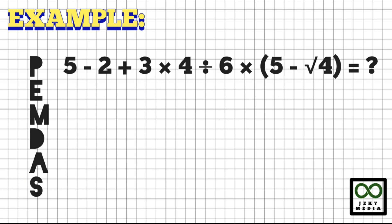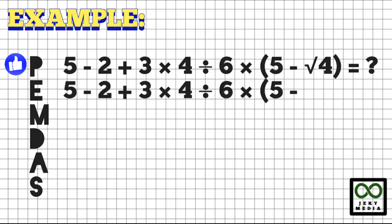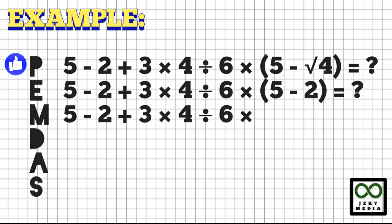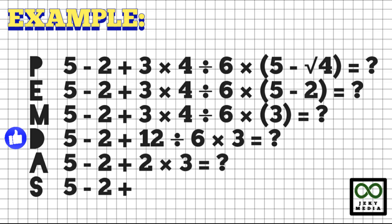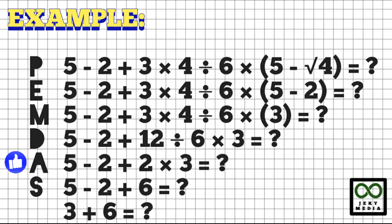Last example: 5 minus 2 plus 3 times 4 divided by 6 times the quantity inside a parenthesis, 5 minus the square root of 4. Let's begin inside the parenthesis and start with the root. The square root of 4 is 2. Still in the parenthesis: 5 minus 2 is 3. Before proceeding to subtraction and addition, let's handle multiplication and division first. 3 times 4 is 12. 12 divided by 6 is 2. 2 times 3 is 6. Subtraction and addition remain from the left: 5 minus 2 is 3. 3 plus 6 is 9.